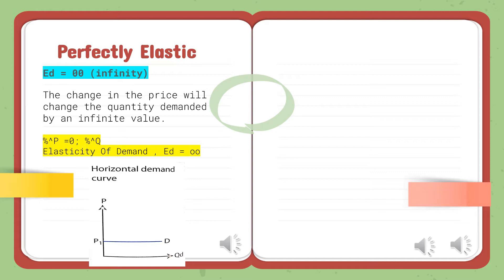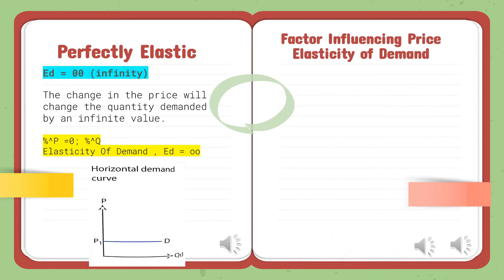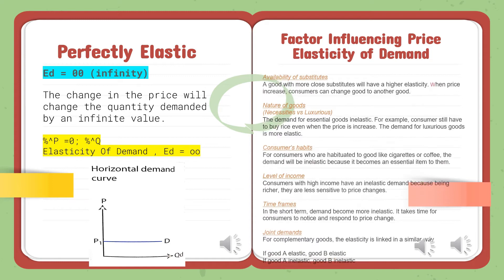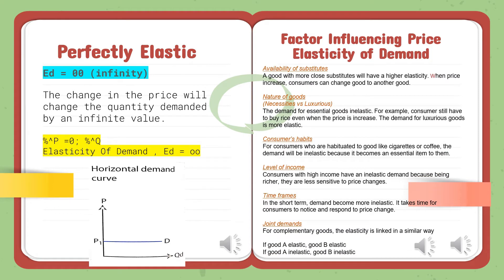The first factor influencing Price Elasticity of Demand is the availability of substitutes. A good with more close substitutes will have a higher elasticity when price increases, as consumers can switch from one good to another. For example, tea and coffee are substitutes — if the price of tea increases, consumers may choose to buy coffee instead.